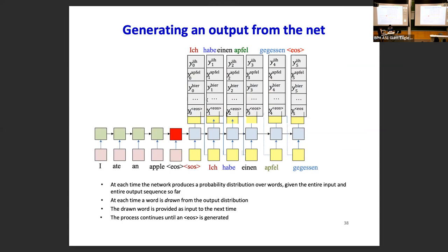At each time step in the output, you have a probability distribution over all classes or words. You select the most probable output and feed it to the next time step, or you can sample a word from the generated distribution and pass it as input to the next decoder time step. For a typical generation process, you continue until you get the EOS token, which signals where to stop.